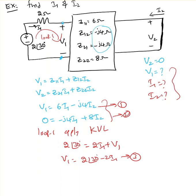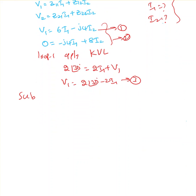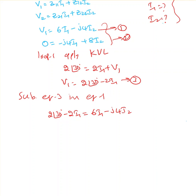Now I substitute equation 3 into equation 1: 2∠30° minus 2·I1 equals 6·I1 minus j4·I2. Moving the 2·I1 to the other side gives 2∠30° equals 8·I1 minus j4·I2. I'll label this as equation 4.